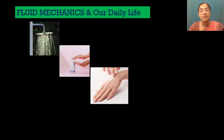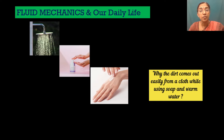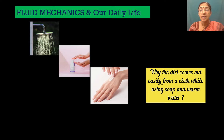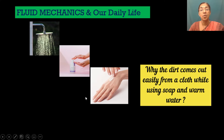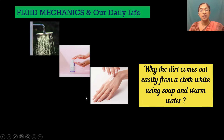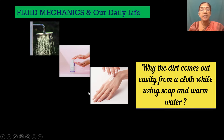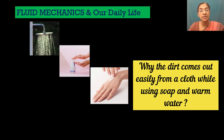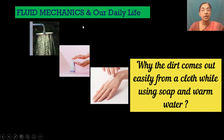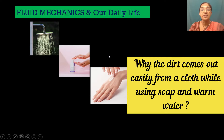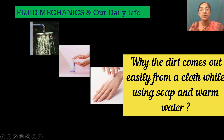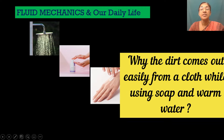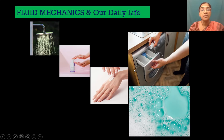Have you ever thought of why dirt comes out easily from a cloth while using detergent and hot water? That is just because higher temperature reduces the viscosity, while the presence of detergent reduces the fluid property called surface tension. These are the two properties which resist the easy movement of water into the fabrics of the cloth.